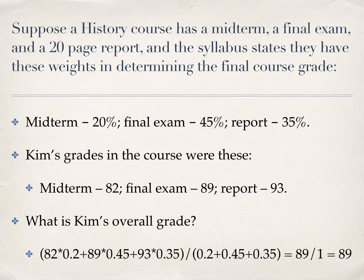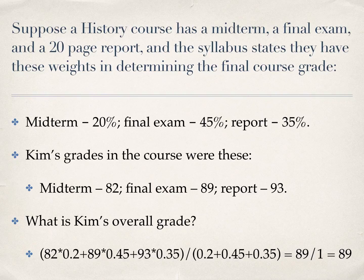Taking 82 times 0.2, 89 times 0.45, and 93 times 0.35 — multiplying each of her grades by their weights and dividing by the sum of the weights — you get 89. So Kim's overall grade is 89. You can see that her final exam grade was weighed more heavily than the midterm and the report, as it should be.